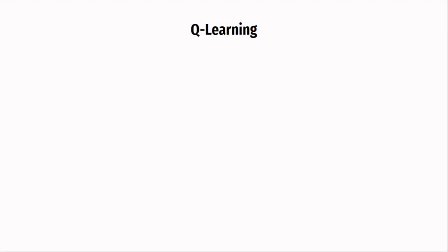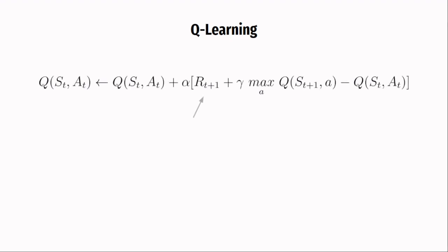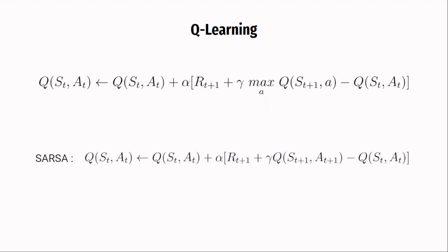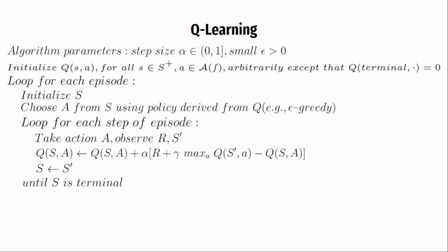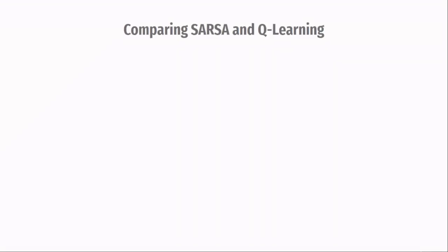An off-policy algorithm for TD control is Q-learning — probably the most widely used algorithm in reinforcement learning, or at least a deep version of it. The Q-learning update target is the reward for the current step plus gamma times the maximum action value at state S(t+1). Remember the difference from SARSA: SARSA's target uses an action given by the policy, whereas Q-learning's target uses the action which is optimal at that state. The algorithm is otherwise completely similar to SARSA, with the SARSA update replaced by the Q-learning update.